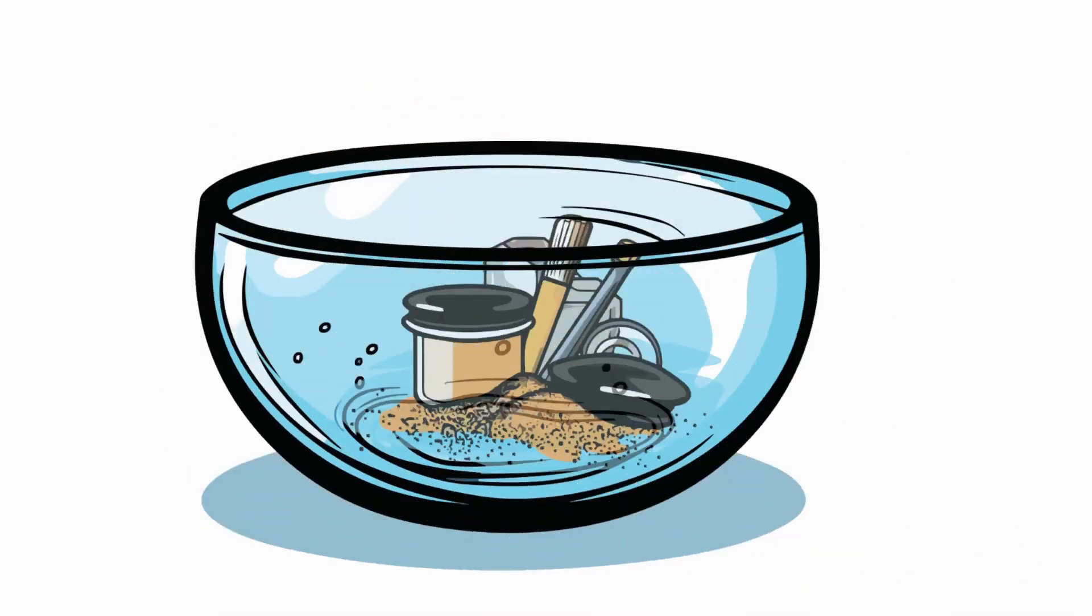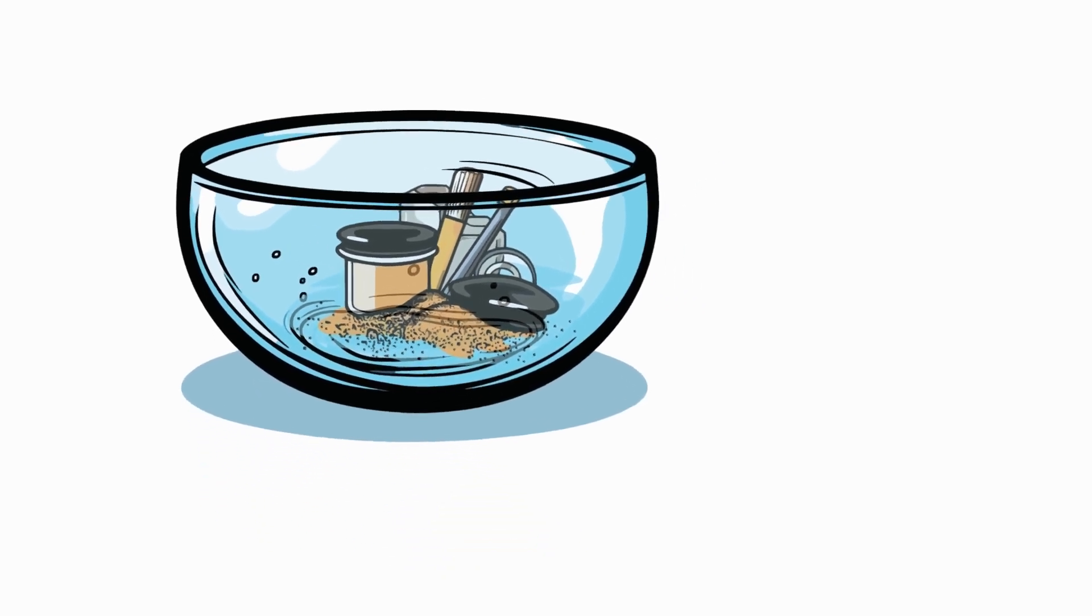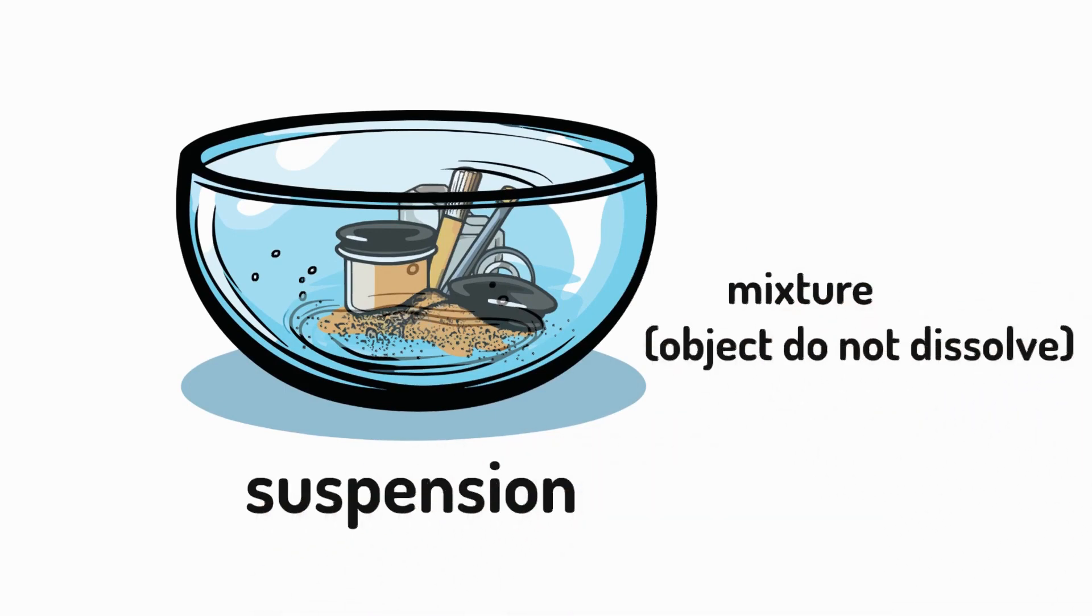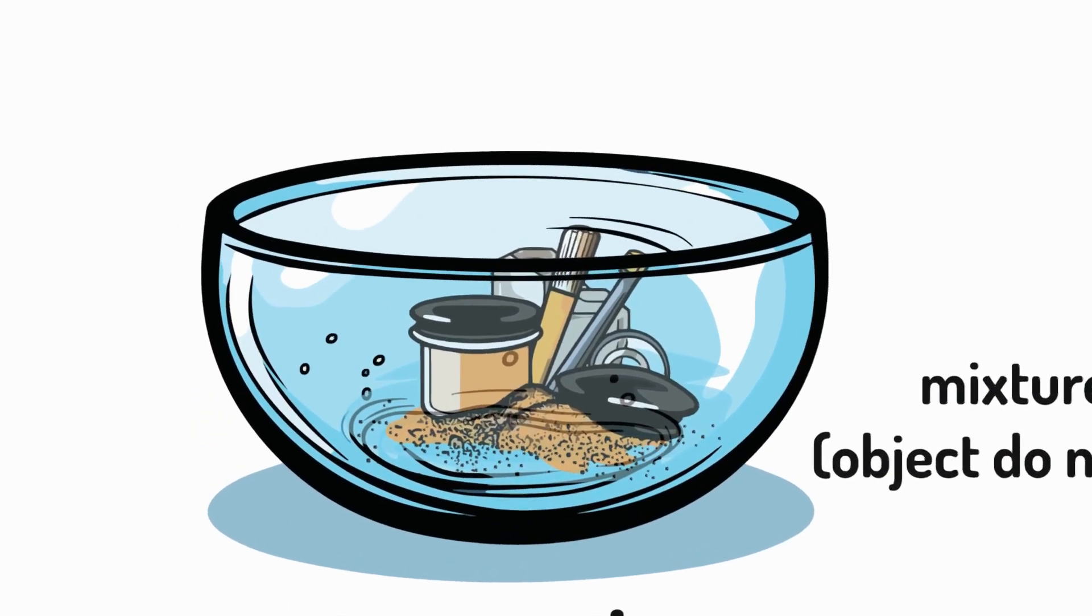Imagine dropping sand, metals and plastics into some water. This forms a mixture. The objects don't dissolve but form what we call a suspension. They just float on the surface or sink. So you can easily pick each object out of the water, reversing the change and separating the mixture.